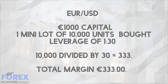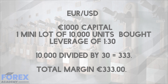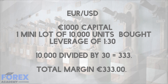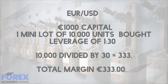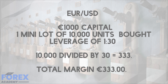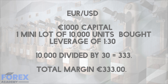For example, a trader wishes to buy the EURUSD with an account size of 1,000 euros and buys one mini-lot of 10,000 units with a leverage of 1 to 30. The margin is calculated as 10,000 divided by 30, which equals 333. Therefore, the trader's margin for that trade would be 333 euros.